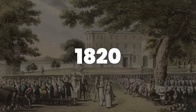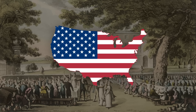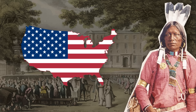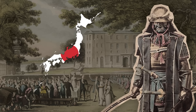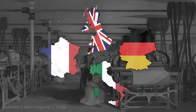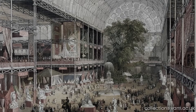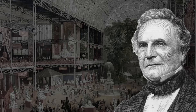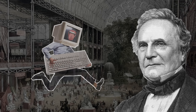The year is 1820 and the world looks vastly different from today. The United States is rapidly expanding westward, leading to conflicts with Native American tribes. Japan is under the rule of shoguns and samurai, and Europe's industrial revolution is in full swing, reshaping society with factories and steam engines. While the world was changing at an unprecedented pace, an English mathematician was about to lay the foundation for one of the most revolutionary inventions in history.